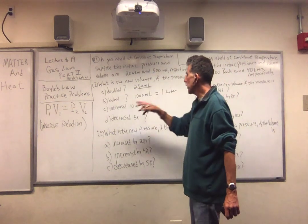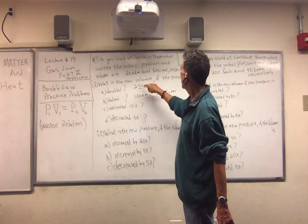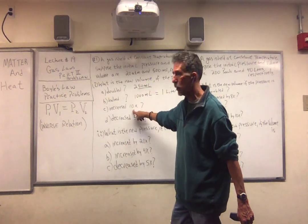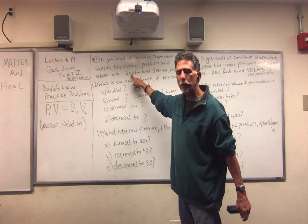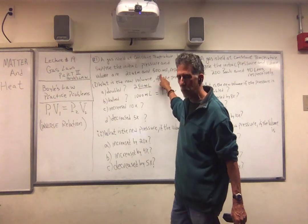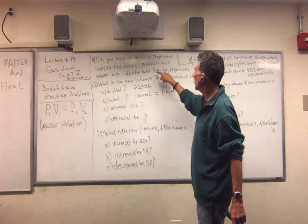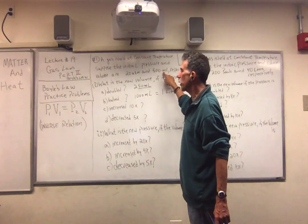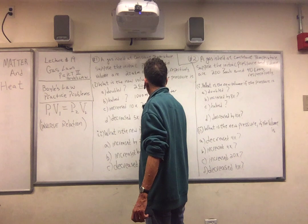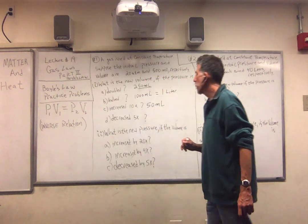Next one. What happens if the pressure is increased 10 times? If the pressure is increased 10 times, the volume must decrease by 10 times — inverse relationship. So 500 milliliters divided by 10, the answer is 50 mL.